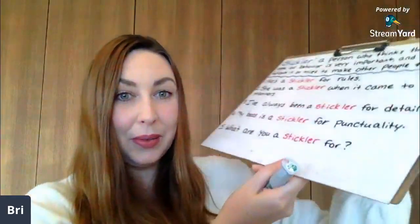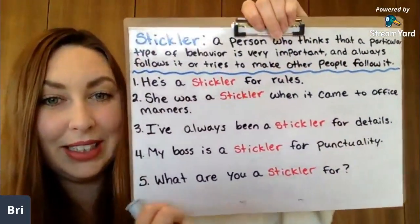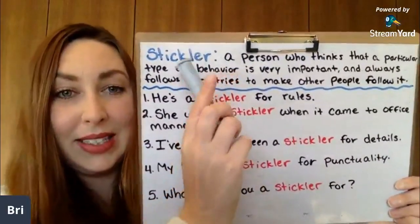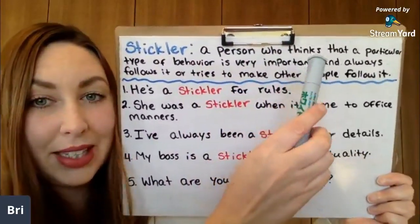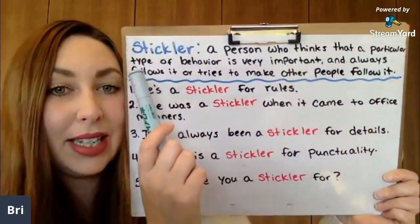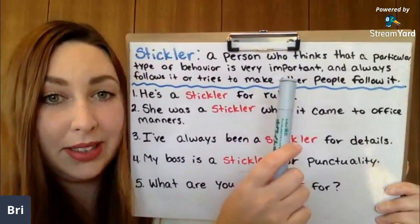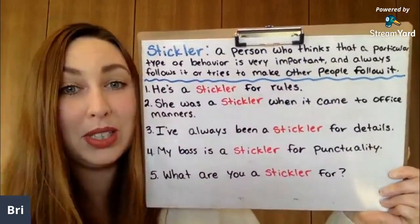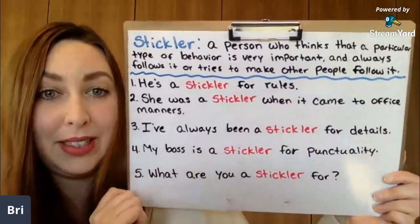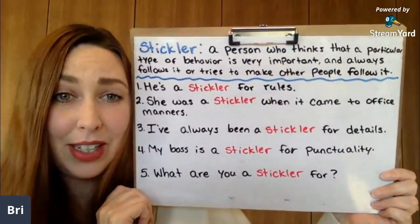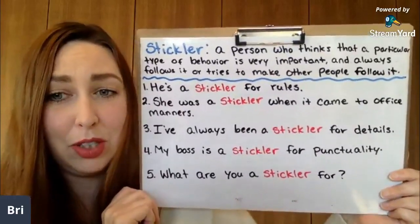So let's go to the big board so you can see it a little bit easier. So what is a stickler? Stickler is a noun. It is a person who thinks that a particular type of behavior is very important — this behavior is very important — and always follows it, or tries to make other people follow it. So they think a certain behavior is very, very important: I want to follow it, you should follow it too.